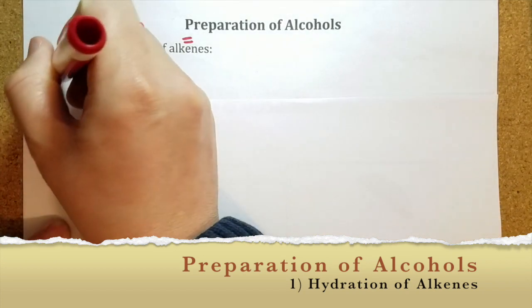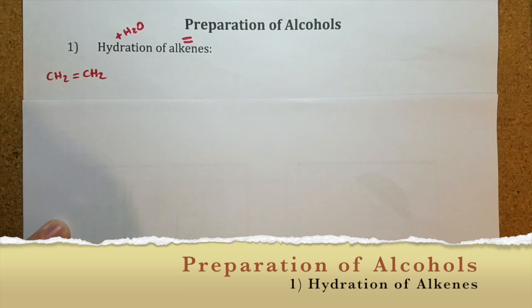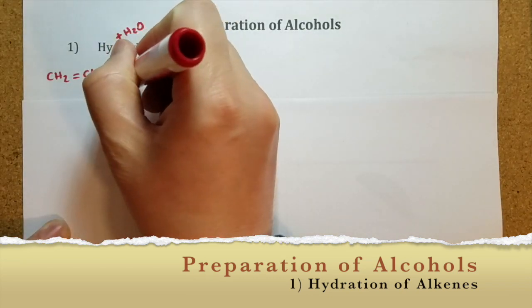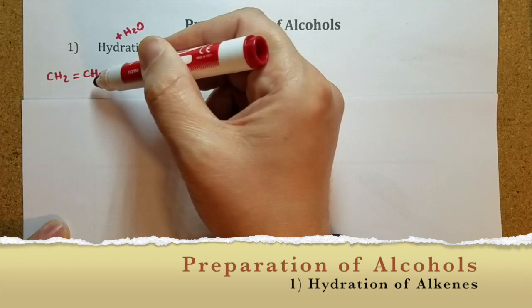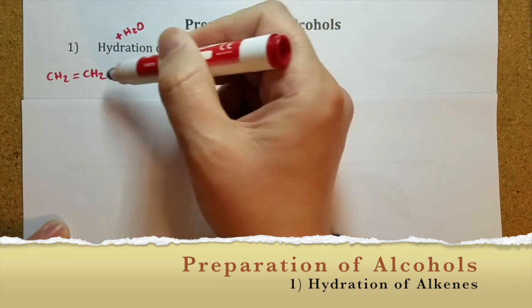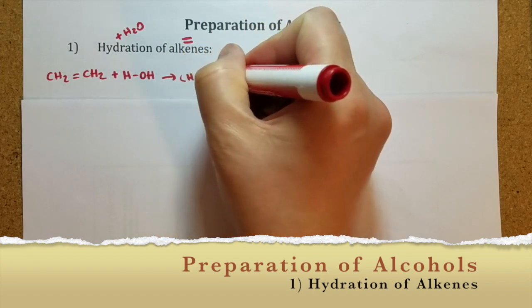In the first one, let's take ethylene, alkene with two carbon atoms. To understand the reaction better, let's write water as HOH. Hydrogen atom adds to one of the carbon atoms and OH group adds to the other one. So, an alcohol, ethanol, is produced.